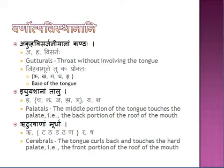The next sthana is the murdha — the front portion of the roof of the mouth, called the hard palate. The letters produced here are: Ta, Tha, Da, Dha, Na (the retroflex series), R (ra, rebha), and Sh (the Sh of Shanmukha). For these letters the tongue curls backwards and the tip hits the murdha. These letters are called the cerebrals.